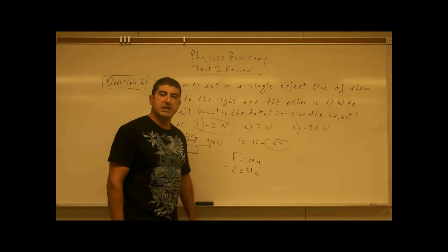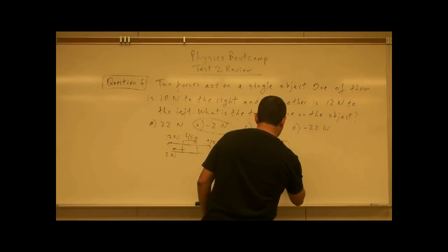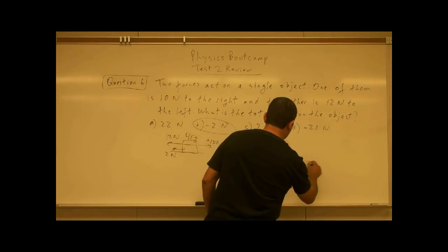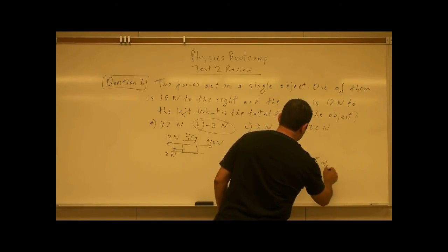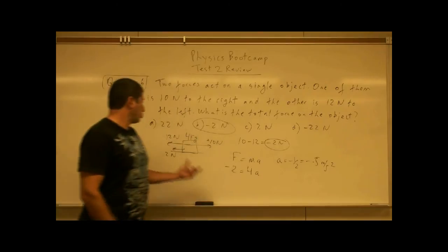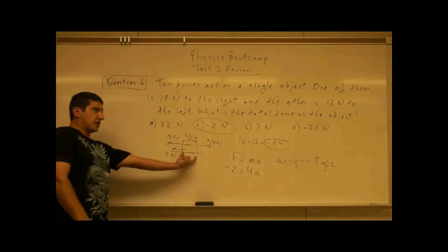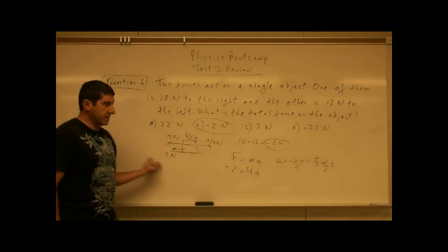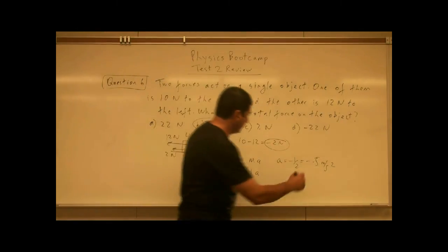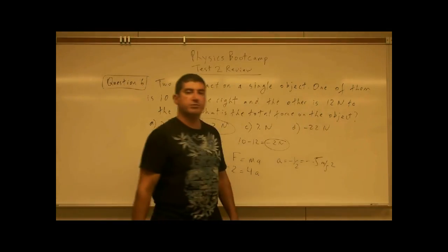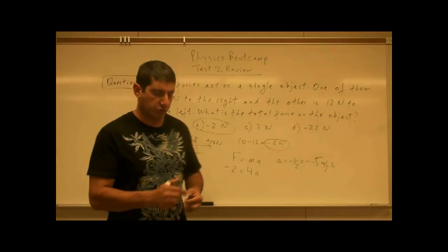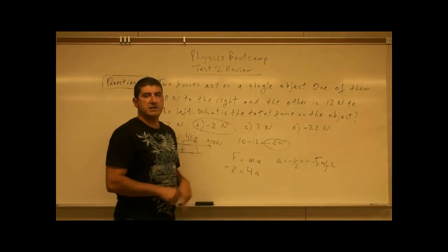The acceleration will be negative half. Negative 1 half, which is negative 0.5 meters per second squared. So the 4 kilogram object would accelerate towards the left at an acceleration of 0.5 meter per second squared. Okay? So that is the answer for that, negative 2 Newtons.